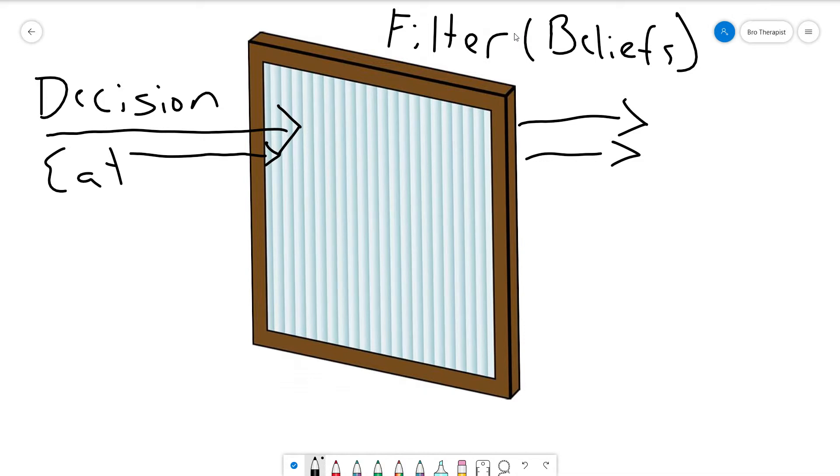Whenever we go to make decisions, whether you're aware of it or not, it's going through this filter, aka your beliefs. In terms of doing things that make us unhappy, even though we might suck at them, I'm willing to bet that a lot of times when we go through the process of making a decision, that filter has some belief that's there that triggers anxiety.